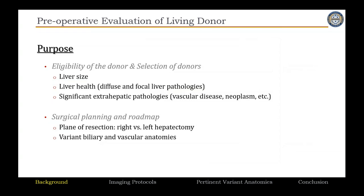The purpose of pre-operative evaluation of living liver donor candidates is first for eligibility — to make sure the person is eligible to donate part of their liver. In cases with multiple donors, the transplant team can decide which donor to choose. We assess liver size, general health of the liver in terms of parenchymal and focal disease, and incidental findings. More importantly, we provide the surgeons a road map for planning. As one colleague always says: if this surgery goes wrong, two people will be hurt — the donor and the recipient.